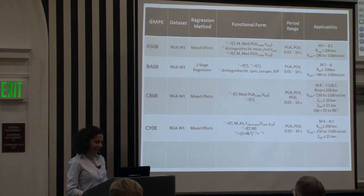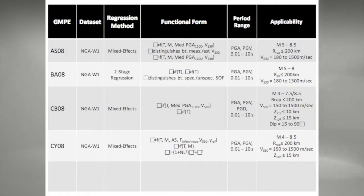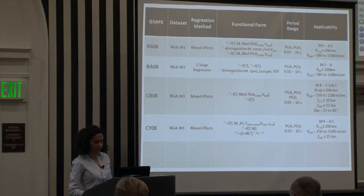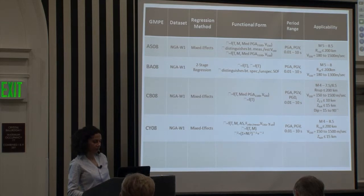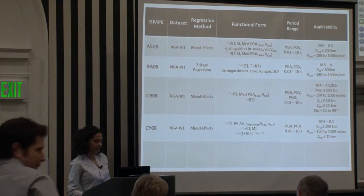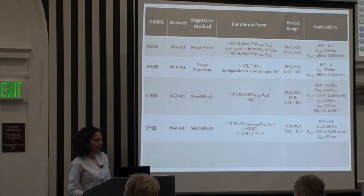Chiou and Young's 2008 used mixed effects algorithm. Their tau, or between event standard deviation, changes with magnitude and spectral period. It also distinguishes between aftershock and main shock, as well as inferred versus measured VS 30. And they included the effects of soil non-linearity on both phi and tau.